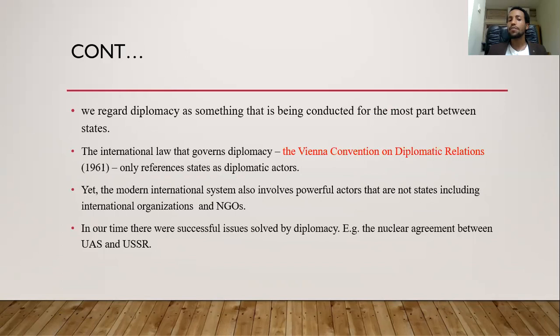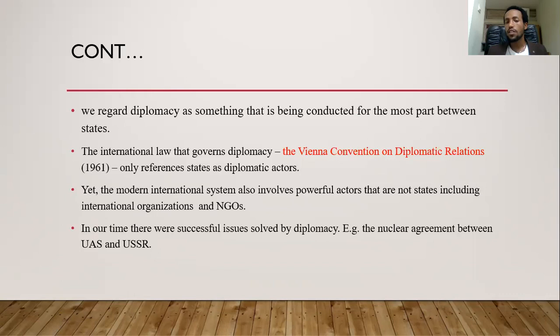Diplomacy is mostly conducted between states, even when multilateral actors are involved. There is international law governing diplomacy called the Vienna Convention on Diplomatic Relations. The modern international system also involves powerful non-state actors such as the United Nations and the World Bank, which can affect negotiations. For example, in the Ethiopia-Egypt negotiation, the World Bank came in as a mediator between the two parties.